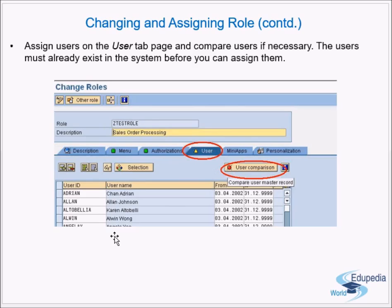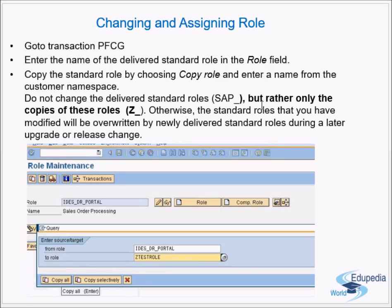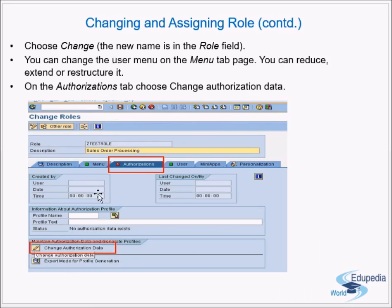To summarize the process for changing and assigning a role: go to PFCG, find the role you want to change, copy it to a new role name starting with Z. All standard SAP roles come with the SAP_ prefix — these are delivered from SAP, so don't make changes to them. After copying, go to 'Change' and verify the new role name is correct.